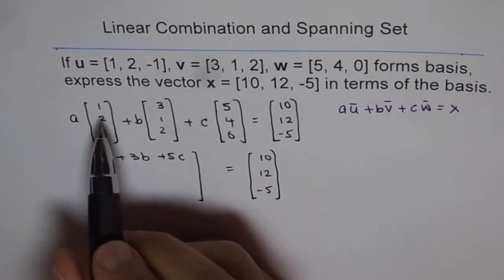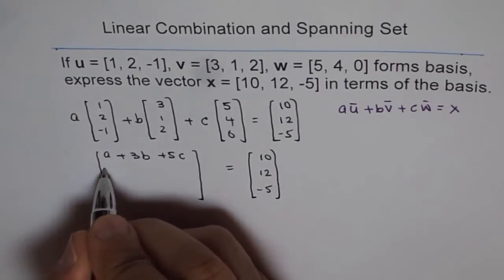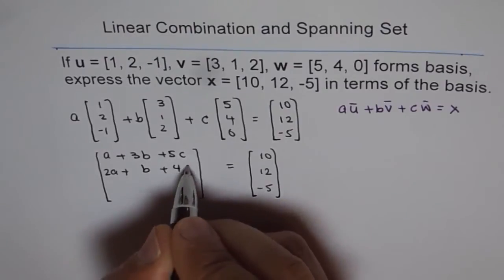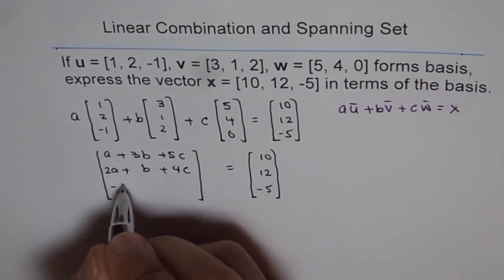Let's go to this second row, 2a, plus b, plus 4c,